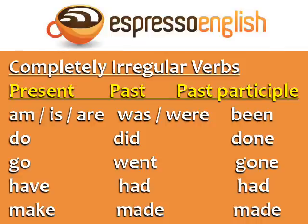Finally, we have the completely irregular verbs. These verbs don't follow any specific pattern, so you just need to memorize their past and past participle forms. The verb 'to be' is am, is, or are in the present; was or were in the past; and been in the past participle. Do, did, done. Go, went, gone. Have, had, had. Make, made, made.